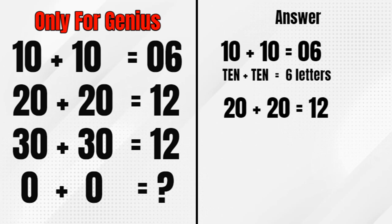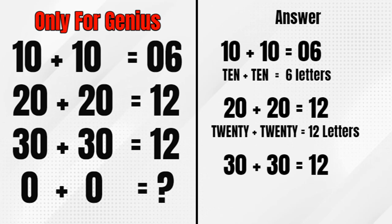And similarly, if we take 20 plus 20, so 20 has six letters, six plus six is 12 letters. Then if we take 30 plus 30 is equal to 12, which is 30 is six letters and six plus six is 12 letters. So 30 plus 30 is equal to 12 letters.